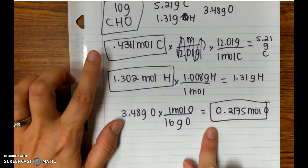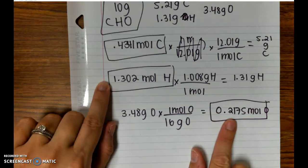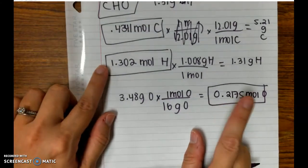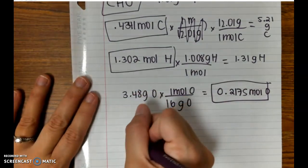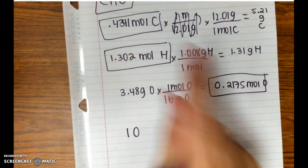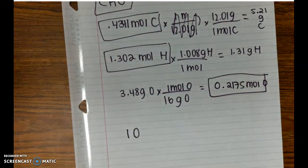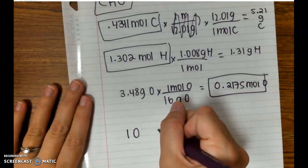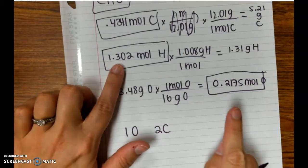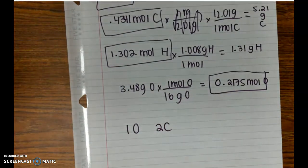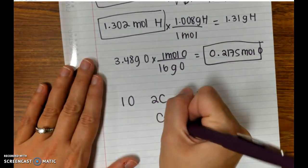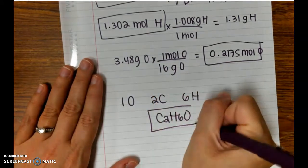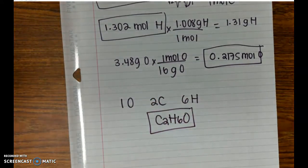So now looking at my three elements, carbon, hydrogen, oxygen, which one is the smallest number? Oxygen is. So I'm going to divide everything by 0.2175. That's going to leave me 1 O. When I take this and divide it by that, that's going to give me 1.99 or 2 C's. And I take the moles of hydrogen and divide it by that, it's going to give me 5.98 or 6 H's. Now we're going to write these in the correct order, so it becomes C2H6O, and that's the empirical formula for this hydrocarbon.